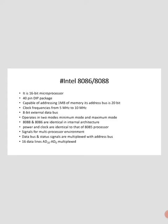The 8088 and 8086 are identical in internal architecture and only differ in external design. The data bus and status signals are multiplexed with the address bus. The 8086 has 16 data lines from AD0 to AD15 which are multiplexed. Multiplex means one input and many outputs, while demultiplex means many inputs and one output.